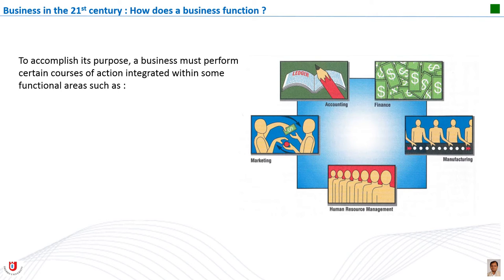To accomplish its purpose, a business organization must perform certain functions — for example, buying and selling goods, manufacturing products, and paying employees. These functions are grouped into general categories called functional areas. The accounting function is responsible for recording and reporting financial information about the business. It records data about the business's assets — items the business owns such as cash, equipment, and buildings — and its liabilities, which are the debts of the business. It also records revenues and expenses, and periodically produces reports on the financial state of the business.